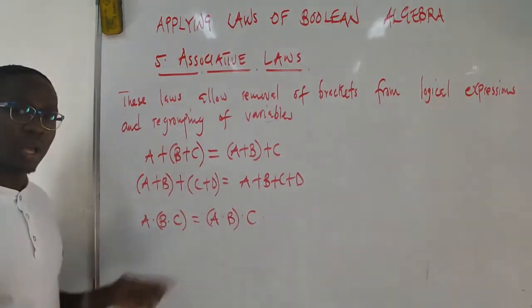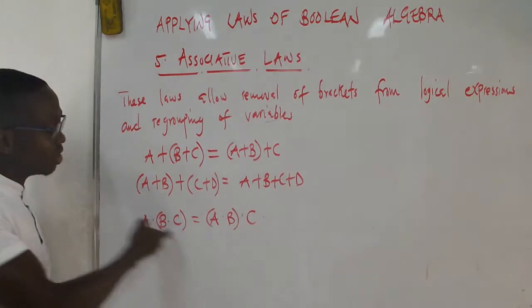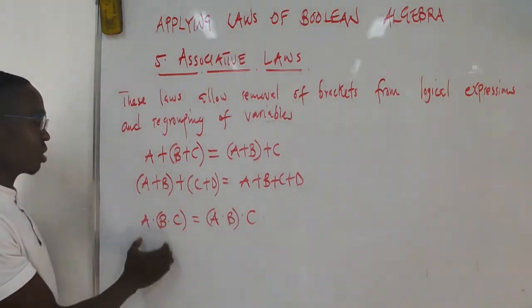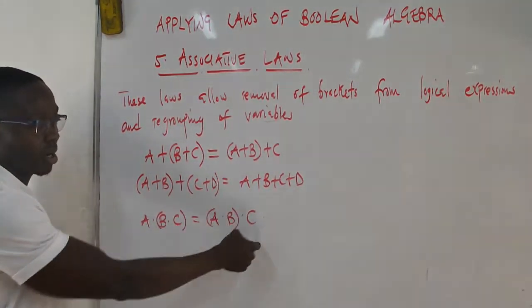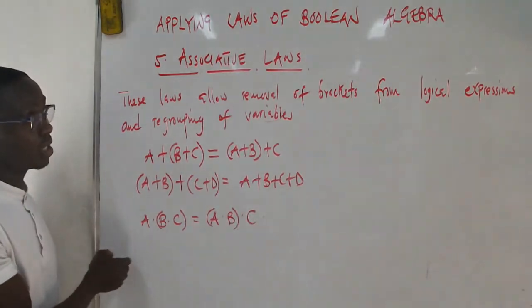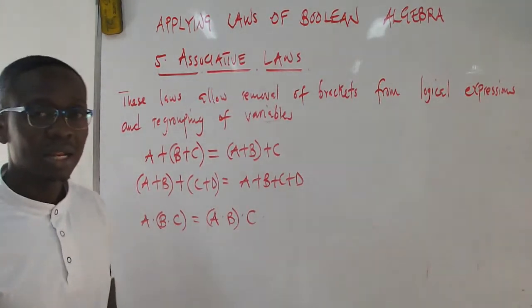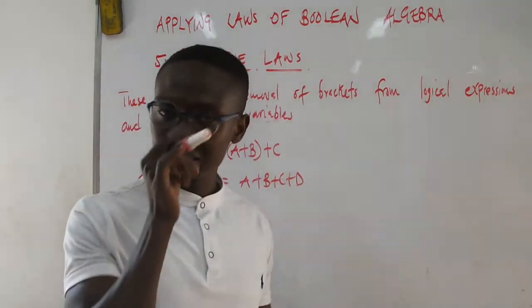Here you can have three numbers multiplying: A times B and C. If you want, you can multiply B times C then multiply to A, or if you want to, multiply A times B and then the product multiply to C. The effect will be the same. In the next lecture, we are going to look at distributive laws.